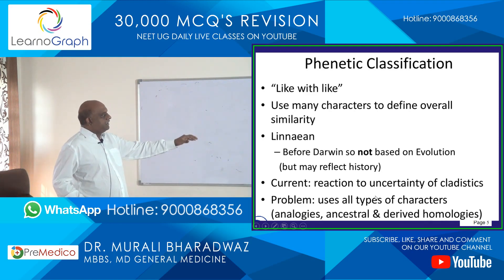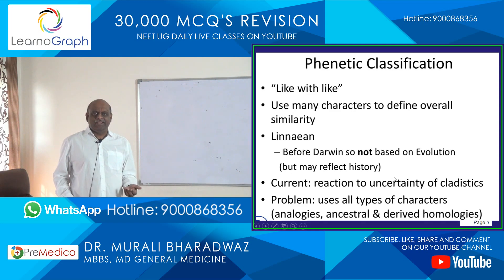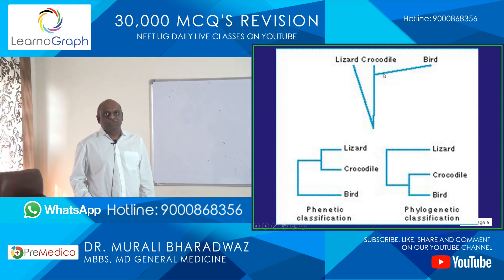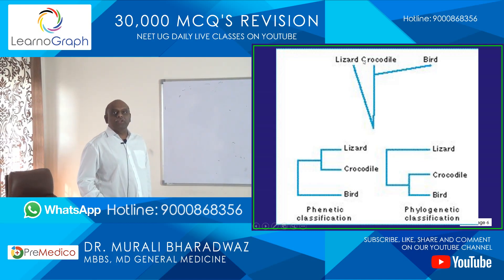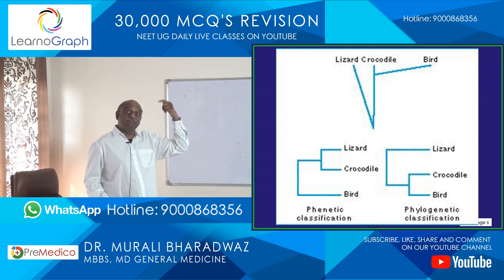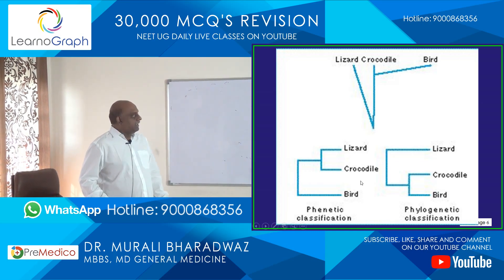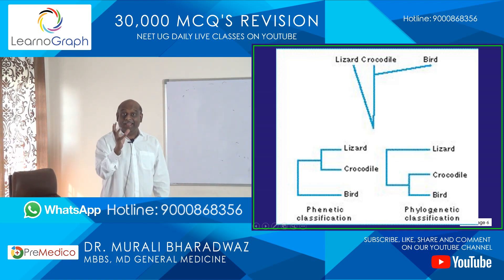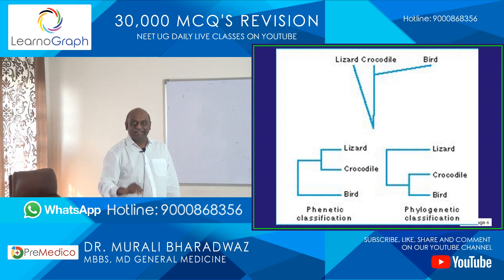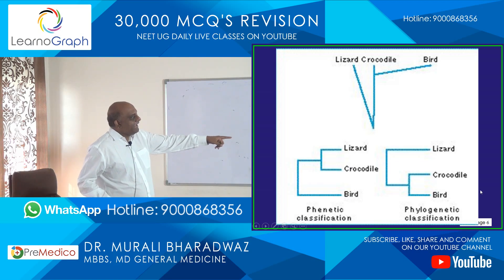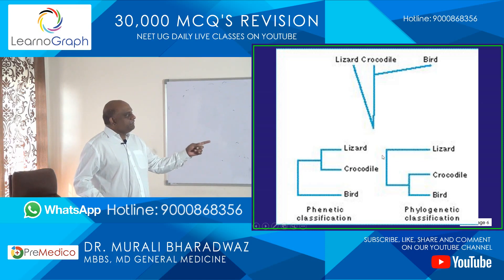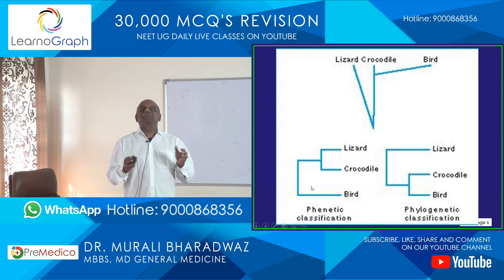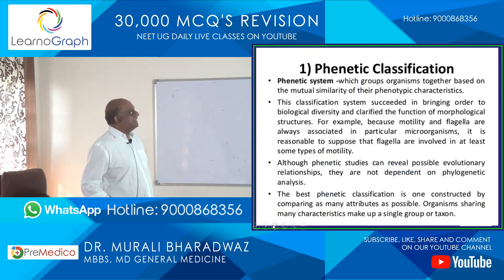Presently the classification is based on DNA, genetics, etc. So if you take the lizard and crocodile, they both have similar body features — that's the reason they are both put into the same class, whereas birds are made different. That was the phenetic classification. Whereas if you take the phylogenetic classification — this is based on evolutionary relationships, and that is the basis of phylogenetic classification, which you have to remember.